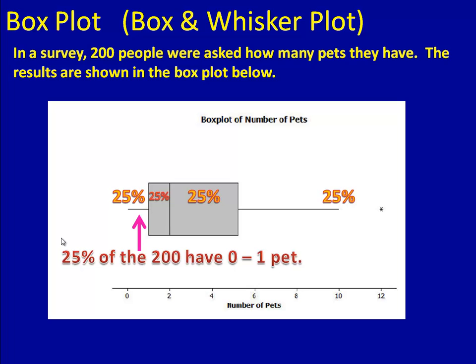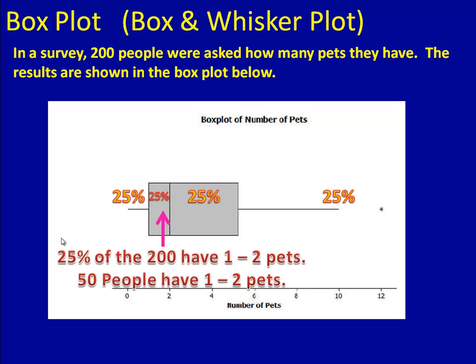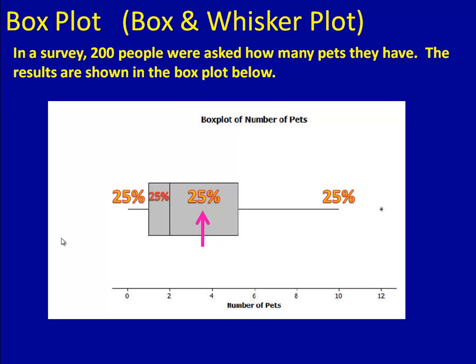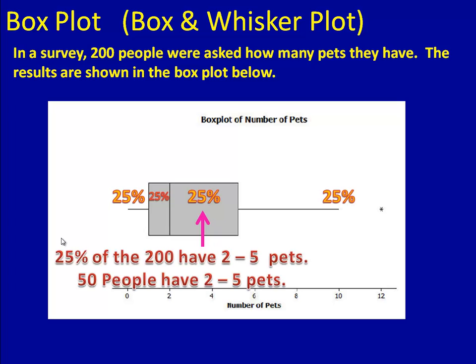The first whisker is from 25% from 0 to 1, so 25% of the people have 0 or 1 pet. In this case, 50. The next section also has 25% of the data. From 1 to 2, we have 50 people who have 1 to 2 pets. The next section also has 25% of the people. It starts at 2 and goes up to 5. So 25% of our people have from 2 to 5 pets. In other words, 50 people.